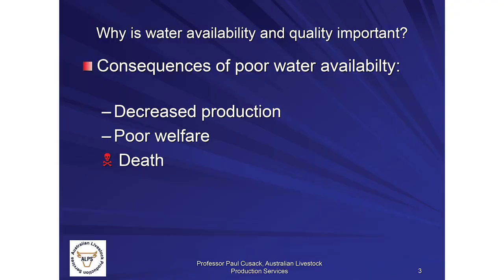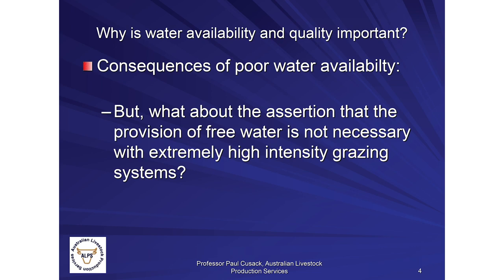If we have poor water availability, that is expressed in terms of decreased production, poor welfare, and ultimately in some circumstances death. In the current environment where requirements for achieving and demonstrating good animal welfare are paramount, the provision of water is one of those basic five freedoms that we absolutely must meet.